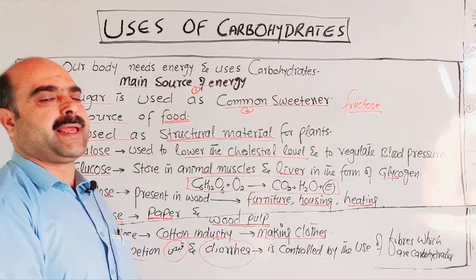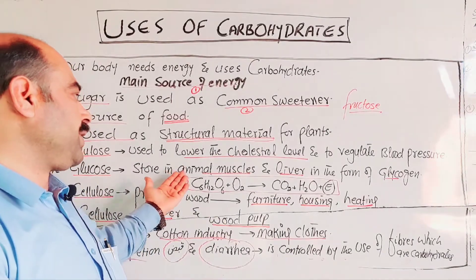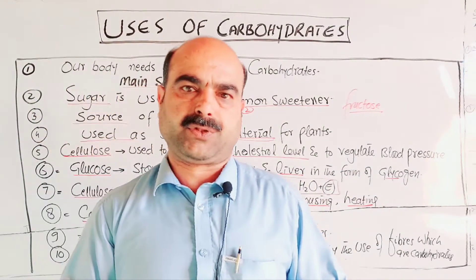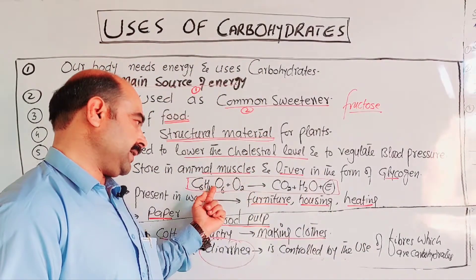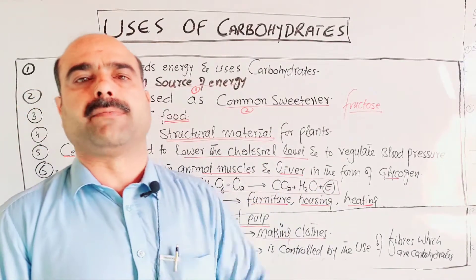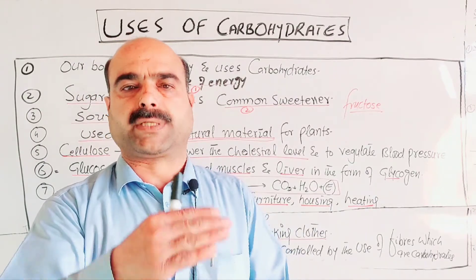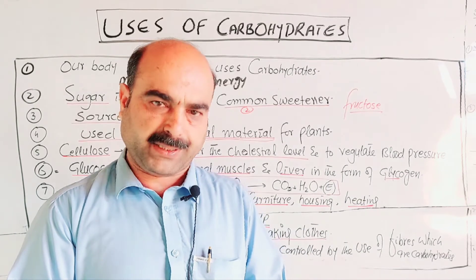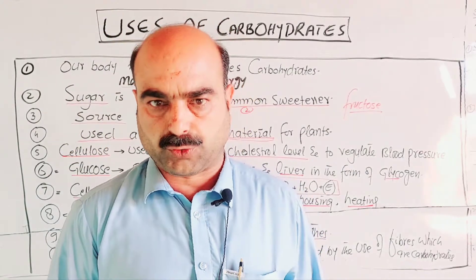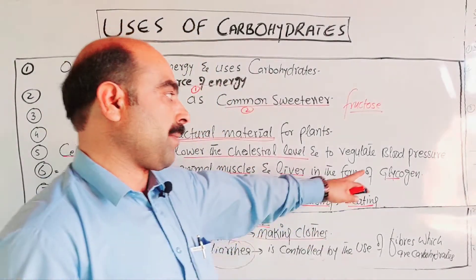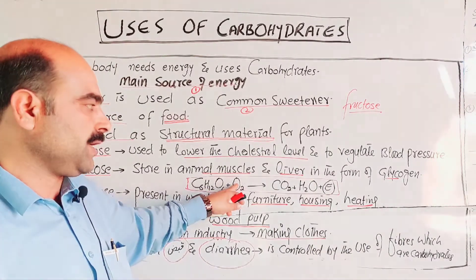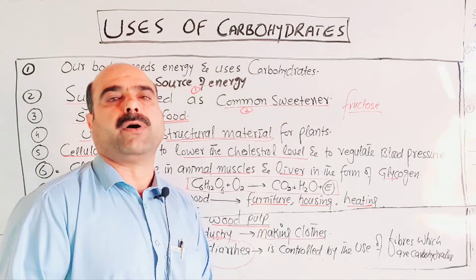Glucose, a monosaccharide, when present in excess in the body, is stored in animal muscles and liver in the form of glycogen. For immediate needs it is oxidized, producing carbon dioxide, water, and energy. When the amount is more than needed it is stored as glycogen in muscles and liver. When we have no food — such as during fasting — this stored glycogen breaks down, converts back to glucose, is oxidized with oxygen, and provides energy so we do not feel hunger.